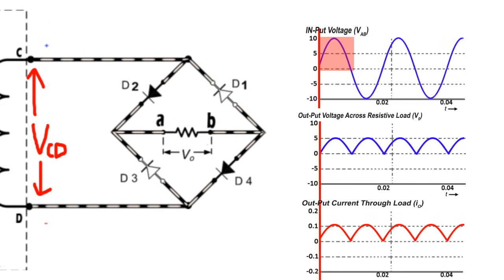During positive half cycle, the terminal C becomes positive and the terminal D is negative. Under this condition, the diodes D2 and D4 are forward biased, which we can see here. However, the anodes of both the diodes are at higher potential with respect to cathodes, whereas diodes D1 and D3 are reverse biased.